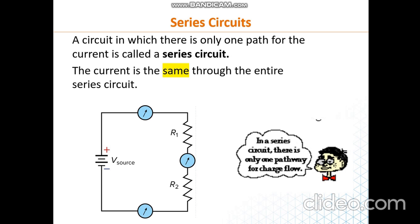A circuit where there is only one path for the current to flow is called a series circuit. What is special about the series circuit is that the current is the same through any resistor. The current passing through R1 is exactly the same current passing through R2, since there is only one path for the current to flow. In a series circuit, there is only one path for the charge to flow, and the current is the same in the entire circuit.